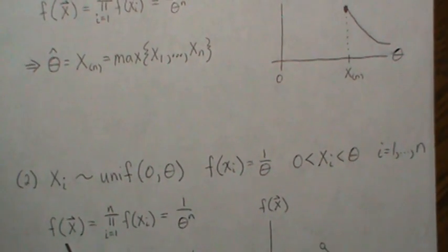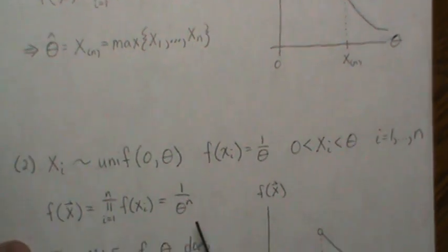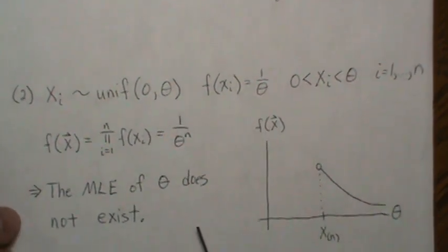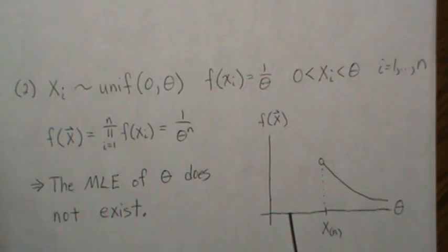So our joint density is the same, 1 over theta to the n, but now when we plot this, the quick answer is the MLE of theta does not exist. And here's why: so our data is along here somewhere and we have our largest value, the nth order statistic.